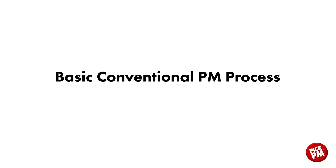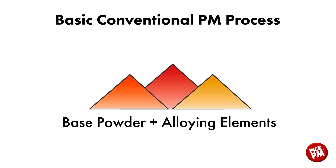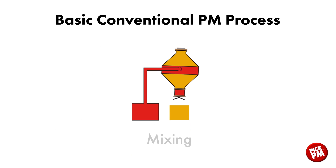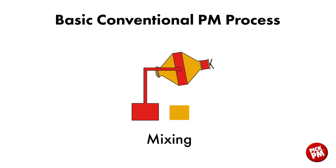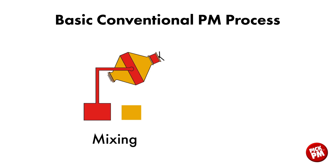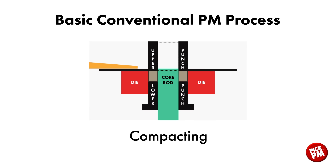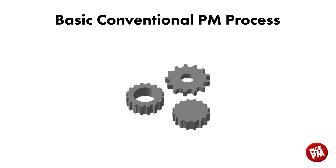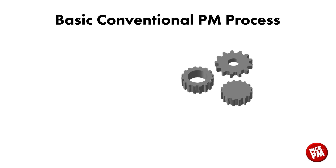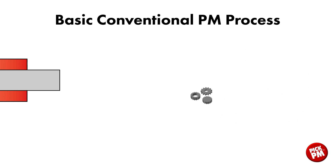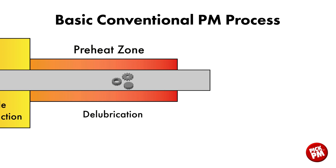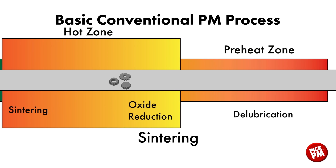When we look at the basic conventional PM process, we start with metal powders. Those metal powders are blended or mixed together with lubricants and other alloying ingredients. From there, the press-ready mix goes to the compacting process, where the powder is consolidated in a closed die and formed to the prescribed density. After compacting, the components are then transported through the sintering furnace, where strong metallurgical bonds are formed between the powder particles.